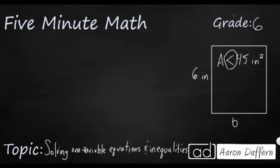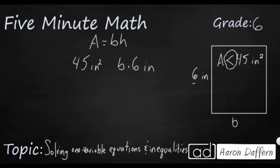If we look at the basic formula for area, we know that A equals base times height. Let's start plugging in our numbers: 45 inches squared. Our base is unknown and our height is 6 inches. I'm going to replace the equal sign with an inequality sign. I flipped it, putting the 45 on the left side of the inequality — notice the opening is still pointing to the 45, so it's still going in the right direction.